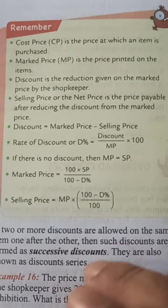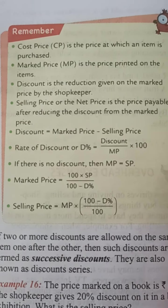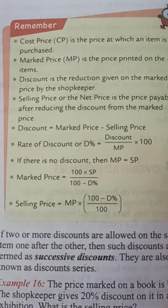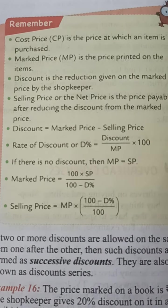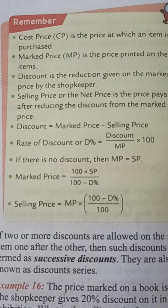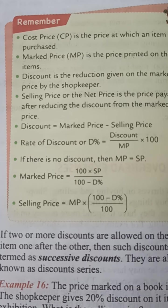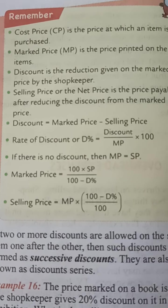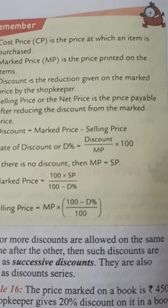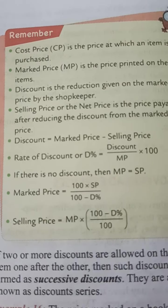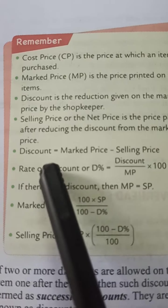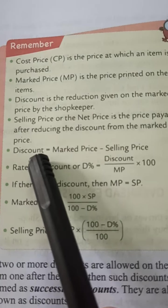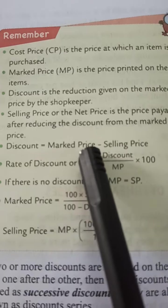Suppose an item's cost is rupees 100 and you are given a 10 percent discount — that is 10 rupees discount. So how much are you paying? The actual price is 100 and you are paying 10 rupees less, so you are paying 90 rupees. So the selling price is 90 rupees.